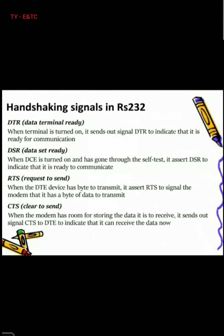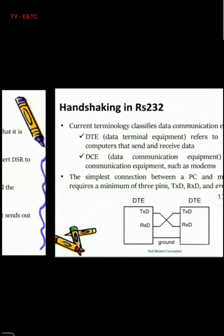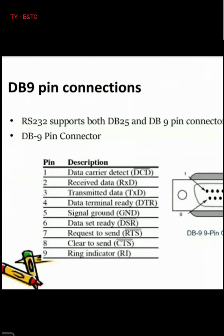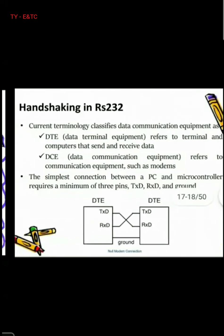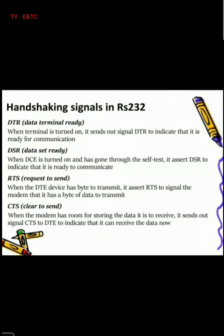These are the different pins of the DB9 connector with their functions. DCD is Data Carrier Detect, RXD is Receive Data, TXD is Transmitted Data, DTR is Data Terminal Ready, DSR is Dataset Ready, RTS is Request to Send, CTS is Clear to Send, and RI is Ring Indicator.